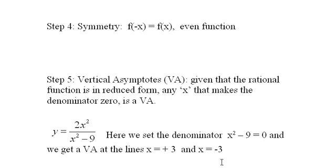And those lines, x equals positive 3 and x equals negative 3, are the vertical asymptotes.